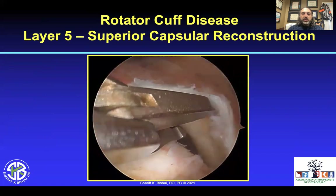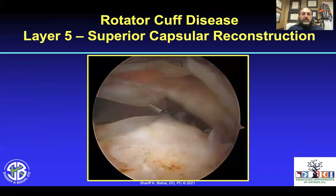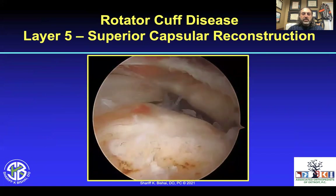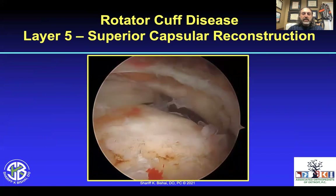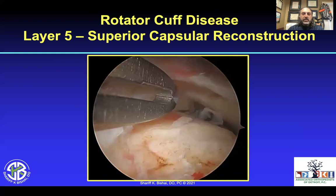It's also important to note that the superior capsule is medially attached to the tuberosity along the articular margin. If you try to bring this over to lateral, you can over-tension this rotator cuff repair and in the end probably end up with a type 2 failure at the myotendinous junction.